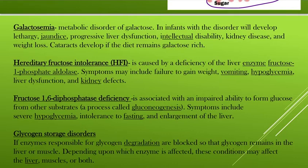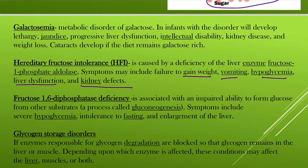Hereditary fructose intolerance (HFI) is caused by deficiency of the liver enzyme fructose-1-phosphate aldolase, with symptoms of weight gain, vomiting, hypoglycemia, liver dysfunction, and kidney defects. There is also fructose-1,6-diphosphate deficiency, which is associated with impaired ability to form glucose from other substances — meaning gluconeogenesis is inhibited — with symptoms including hypoglycemia, intolerance to fasting, above-normal glucose concentration during fasting, and enlargement of the liver.